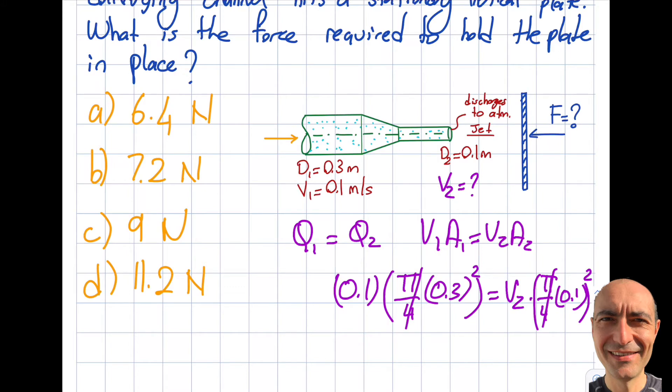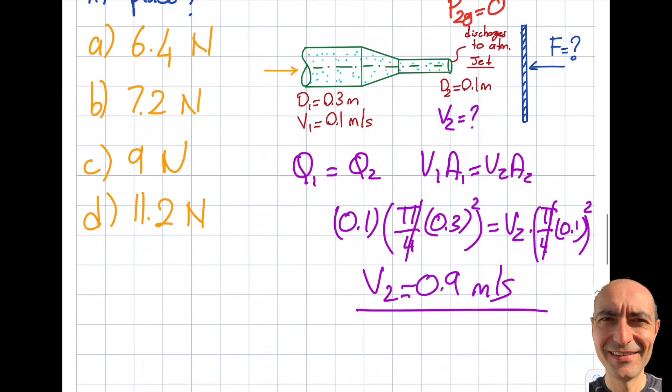The π/4 cancels. When I divide this by this, I get 9. 9 times 0.1 gives me a V2 value of 0.9 meters per second. That was the easy part taking me one step closer to the answer. Another question: this is a water jet discharging to atmosphere. What will be the pressure here? P2 gauge will be 0.